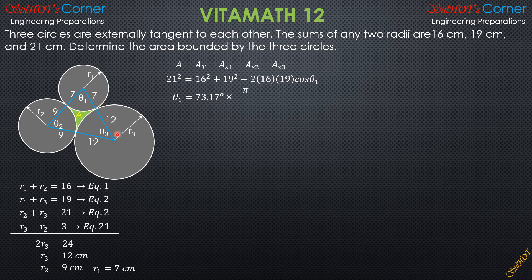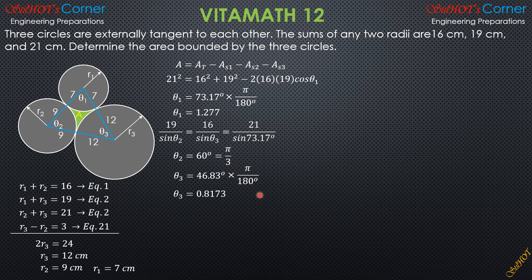So theta 1 times pi over 180 degrees to convert that to radians—theta 1 is 1.277 radians. By sine law, 19 to sine of theta 2 equals 16 to sine of theta 3 equals 21 to sine of theta 1, which is 73.17 degrees. We can now solve for theta 2: theta 2 equals 60 degrees or pi over 3 radians. Theta 3: 16 sine of theta 3 equals sine 73.17 over 21, so theta 3 equals 46.83 degrees times pi over 180 degrees to convert that to radians, equal to 0.8173 radians.